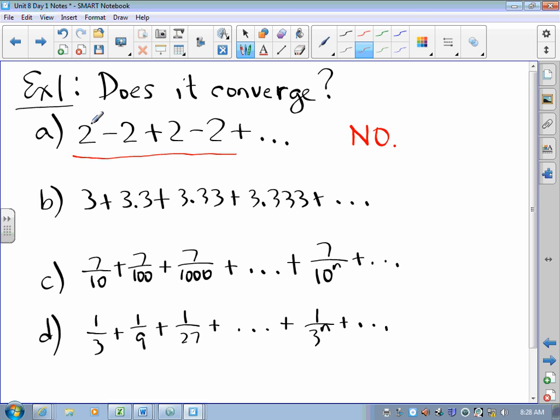That series does not converge. Then I take a look at the second example. That's three. That's 6.3. That's 9.63. That's 12.963, and so on.